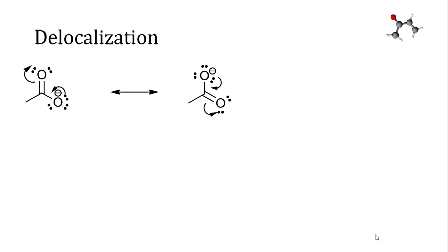Delocalization is a more proper word for the phenomenon resonance is trying to describe. We use resonance structures as an attempt to rationalize the fact that a single Lewis structure for a molecule might not be sufficient to represent the bonding or the electron distribution within that molecule. Sometimes electron pairs are shared by two or more than two atoms, and our traditional structure drawing does not easily allow for that. The phenomenon we are trying to represent is delocalization.